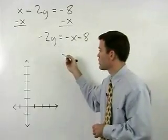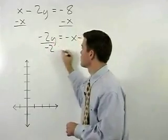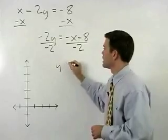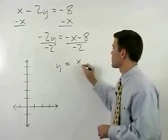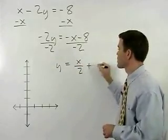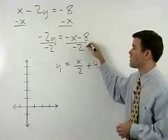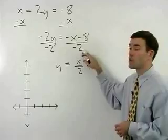Next, we divide both sides by negative 2 to get y equals x over 2 plus 4. Remember to divide both terms on the right side of the equation by negative 2.